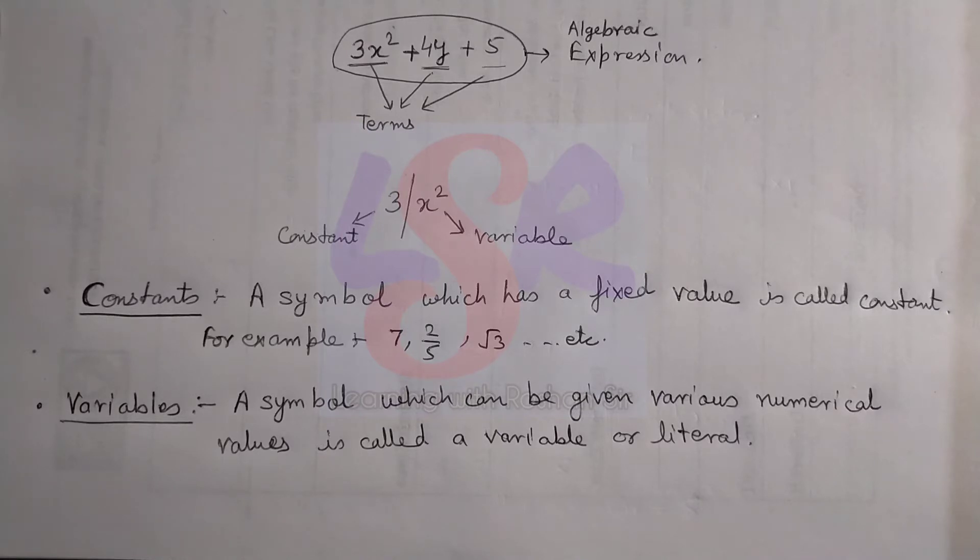For example, x equals 2, x equals 4, and x equals minus 10, and so on. Here we can see the variable x is being given different values: 2, 4, and minus 10, and it can be given many more also. So here x is a variable.